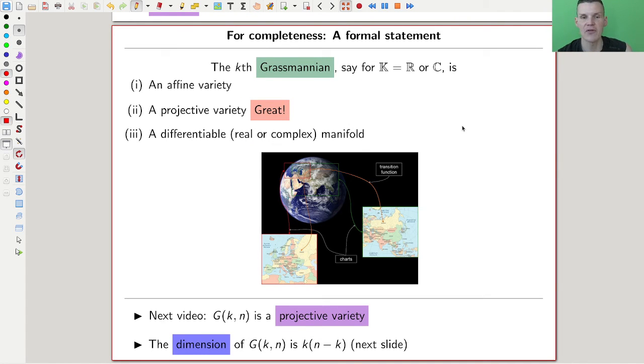This makes it believable, and it is true, that you can say quite a lot about this class of examples. That's why this is one of the most crucial examples ever, because it's a natural example from linear algebra. Grassmannians are affine varieties, they're projective varieties. I'll show you next time how to see that they're projective varieties.